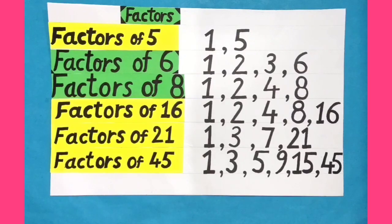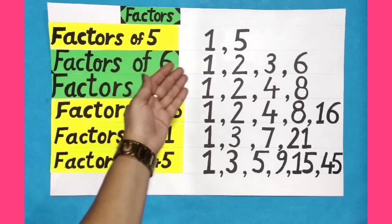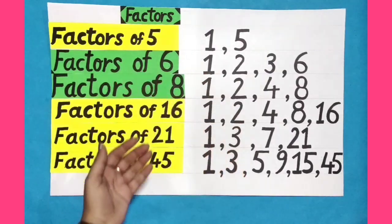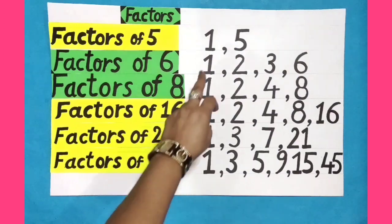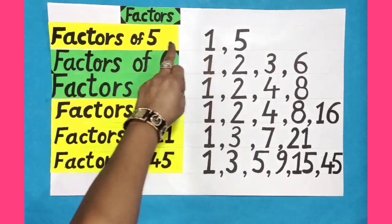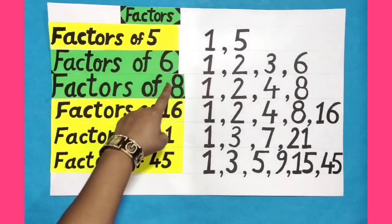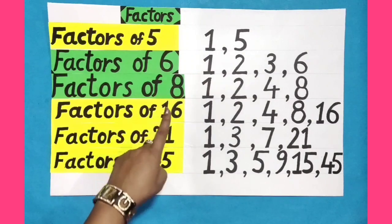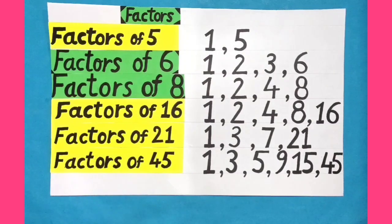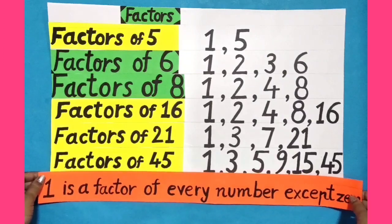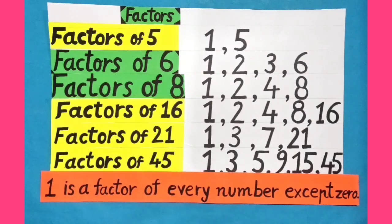Dear students, you have already learnt how to do factors of different numbers. Here, I have written factors of some of the numbers. We can see that 1 is the factor of 5. Similarly, 1 is the factor of 6, 8, 16, 21 and 45. That means 1 is the factor of every number except 0.